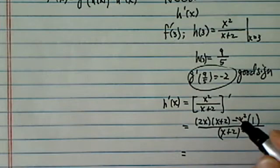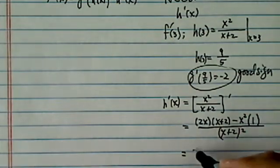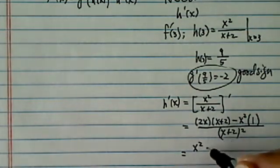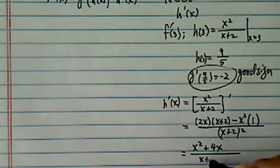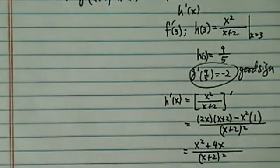Now let's simplify. This is 2x squared minus x squared, so I have x squared, and then I have plus 4x. That's left on top, and x plus 2, the whole thing is squared. Now having found all this, let's take a look at what we need then.